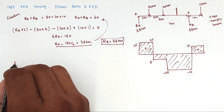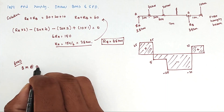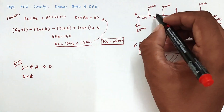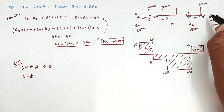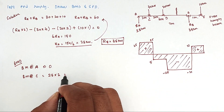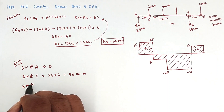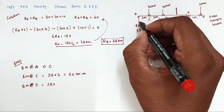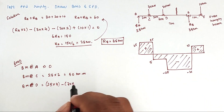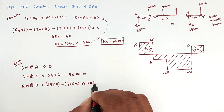Next is the bending moment calculation. Bending moment at A = 0. Bending moment at C (2 m from A): 25 × 2 = 50 kNm (clockwise, positive). Bending moment at D (4 m from A): 25 × 4 − 30 × 2 = 100 − 60 = 40 kNm.